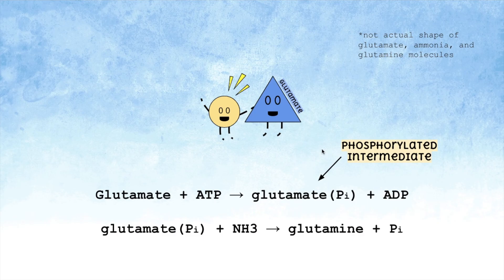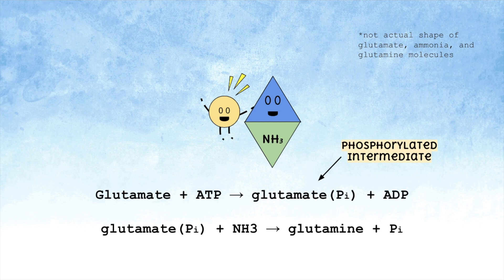Glutamate, in the form of phosphorylated intermediate, now has enough energy to react with ammonia to form glutamine. This is what I meant earlier when I said that the exergonic reaction fuels the endergonic reaction.